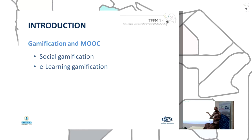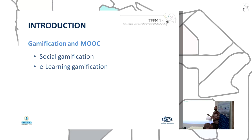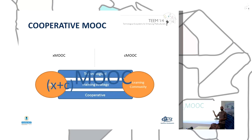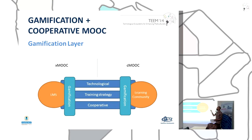There are two research lines when we focus on gamification and MOOC. Social gamification focuses on elements of learning social network platforms, and learning gamification focuses on elements within the learning management system. We propose a cooperative MOOC model based on this cooperative approach, which combines the two types of MOOC: X and C.